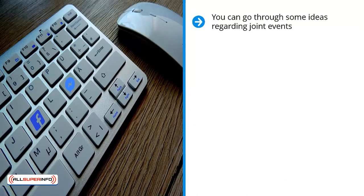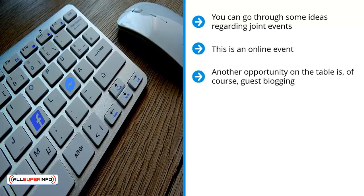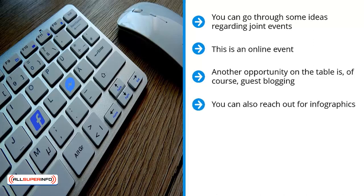You can also explore ideas for joint events — not a physical event requiring a venue or security, but an online event such as a seminar, a live Facebook session conducted from two locations, or an interview. Another opportunity is guest blogging, which is very value-packed: you get direct traffic to your link and tremendous SEO benefits if the partner has a high-value blog. You can also reach out regarding infographics — you create an infographic and the admin posts it on their blog with a link back to you, which also boosts your SEO. Finally, you can collaborate on custom content intended for both your audiences.